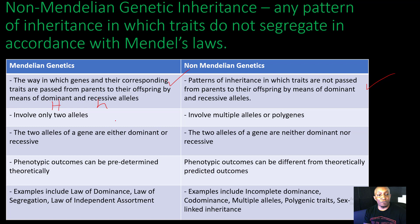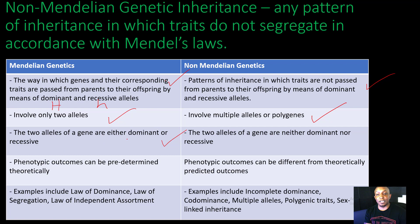Mendelian genetics involve only two alleles, while non-Mendelian genetics involve multiple alleles or polygenes — so you're going to have more than two alleles involved. In Mendelian genetics, the two alleles of a gene are either dominant or recessive, giving you homozygous dominant, heterozygous, and homozygous recessive. But in non-Mendelian genetics, the two alleles of a gene are neither dominant nor recessive — this is where factors like incomplete dominance or co-dominance come into play.